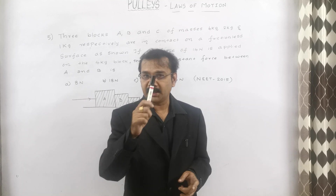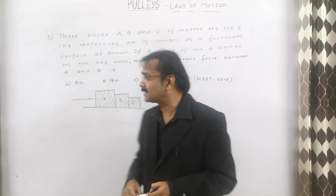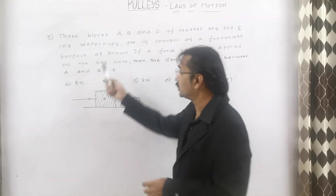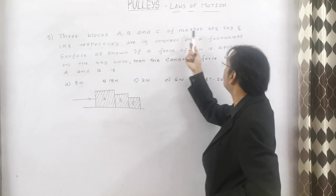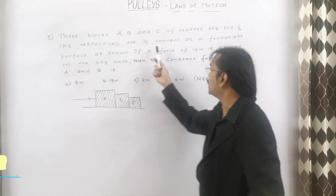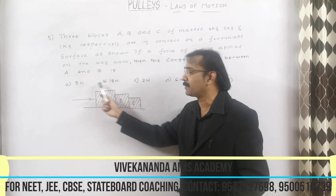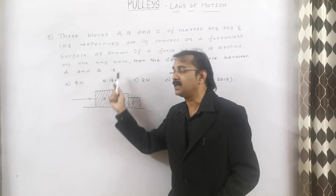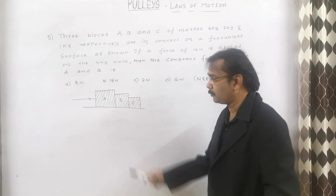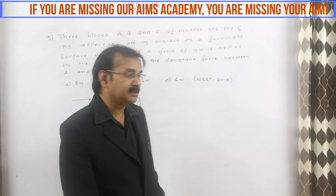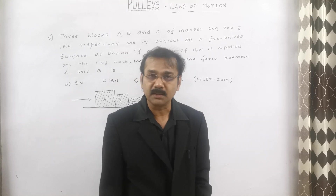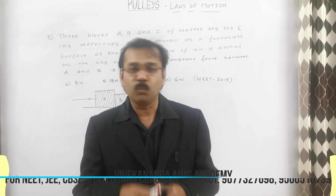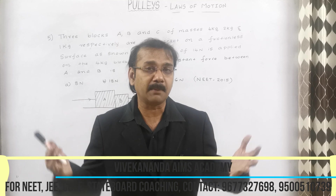Let us go for the fifth question in the chapter of Laws of Motion, topic of pulleys. This question is also very important — I am expecting it in NEET 2021. The question: three blocks A, B and C of masses 4 kg, 2 kg and 1 kg respectively are in contact on a frictionless surface. If a force of 14 Newton is applied on the 4 kg block, then the contact force between A and B is asked. Options are: option A 8 Newton, option B 18 Newton, option C 2 Newton, and option D 6 Newton. This question was asked in NEET 2015. We are not going to use any formula — in a single step you will find the answer.